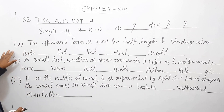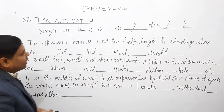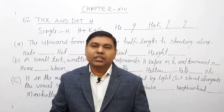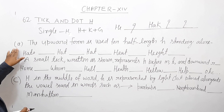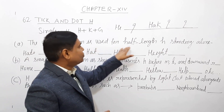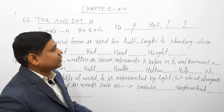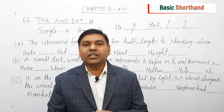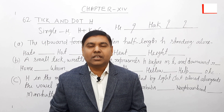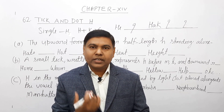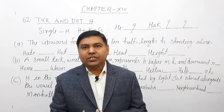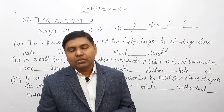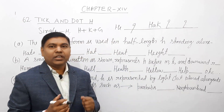अब इसमें तीन points हैं जो आपको ध्यान से देखना है पूरी video में शुरू से लेके अंत तक। पहला point यह है कि the upward form is used for half length — H standing alone। H अगर single आता है और उसके साथ अगर T या D का sound आता है, तो आपको H upward में बनाना है, वो भी half length में।